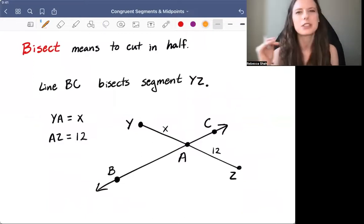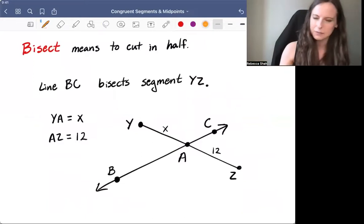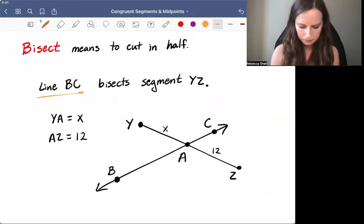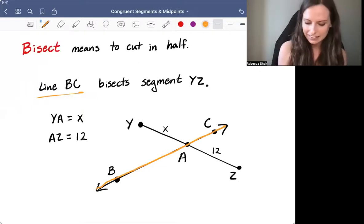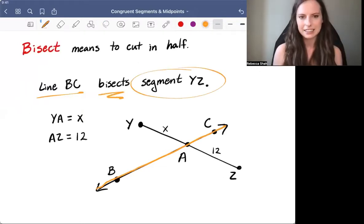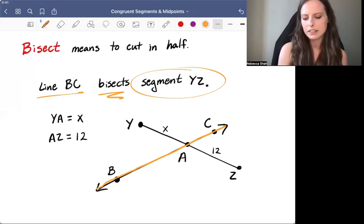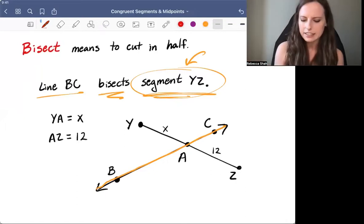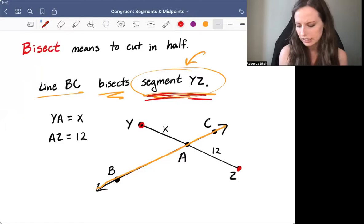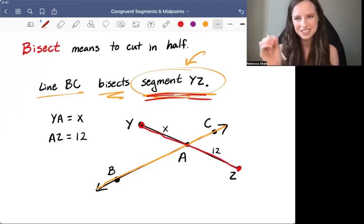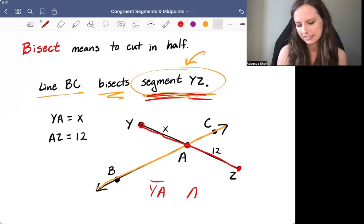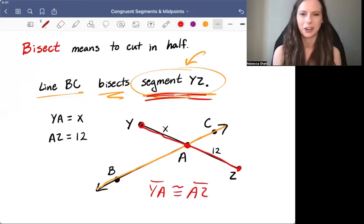Bisect just means to cut something in half. Let's look at this diagram and see what's going on. It says line BC, well, line BC is right here, bisects segment YZ. Whenever you're reading this, the thing that comes after the word bisect is the thing that's getting cut in half. So in this case, segment YZ, that's right here, is getting cut into two congruent segments, YA and segment AZ. Those two segments are congruent.